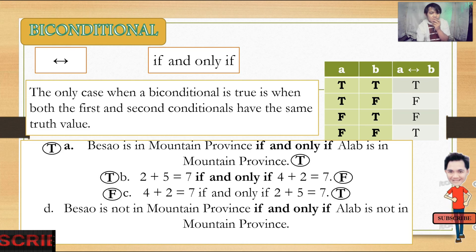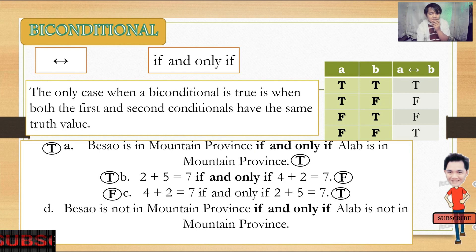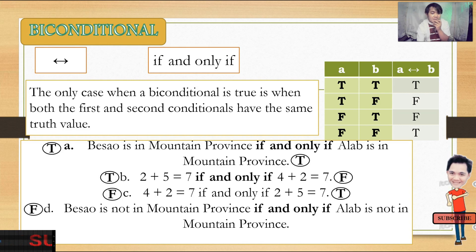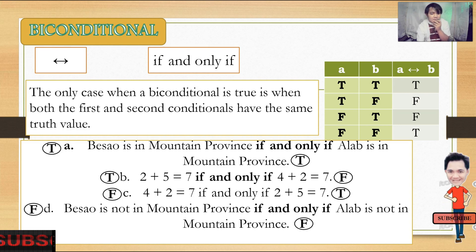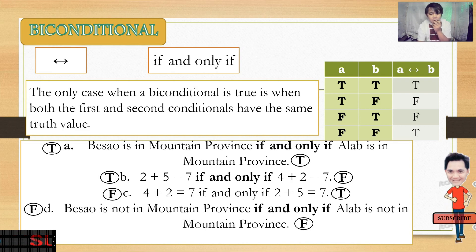Last example: 'Bissau is not in mountain province if and only if Alab is not in mountain province.' Both statements are false — a false-false combination — so the truth value is true. That ends our presentation.